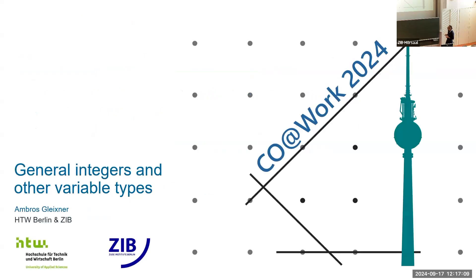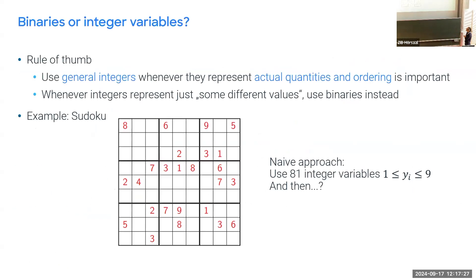The final model is a simple binary program. In the knapsack example it was clear we'd use binary decision variables, but often it's not clear what variable types to use. I want to spend some time discussing when to use more general integer variables. A good example here is Sudoku — the task is to find a number between one and nine for each field; some are pre-given, and each row, column, and box must contain each number exactly once. Naively you could model this with 81 integer variables for each of the nine-by-nine fields.